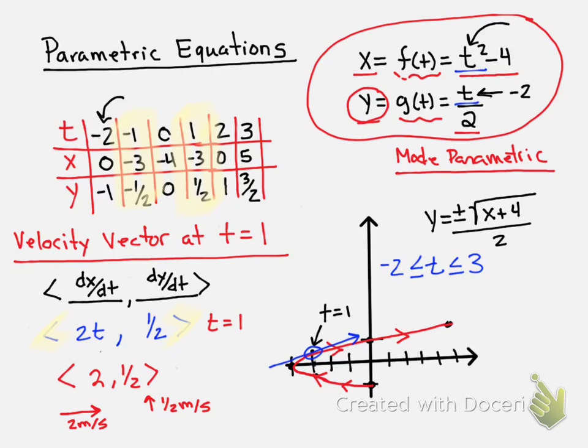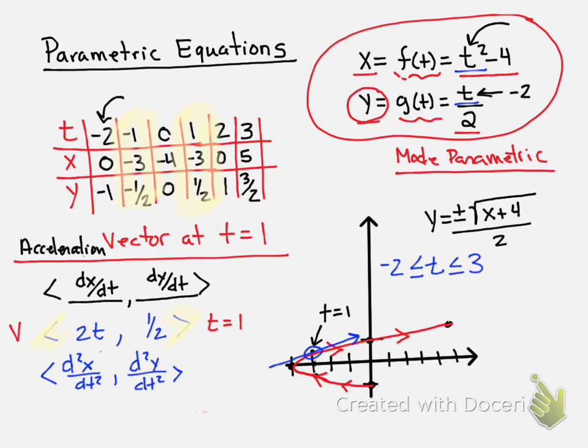We can also look at acceleration in the same way. Acceleration will be the second derivative of the position in the x and the second derivative of the position in the y with respect to time. And so since we've kept our velocity vector, our acceleration vector will be <2, 0>. We're not accelerating vertically at all, but we are accelerating horizontally at a constant rate of 2.